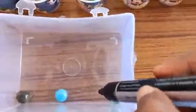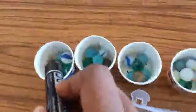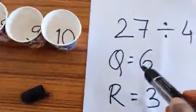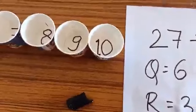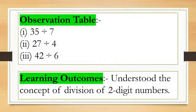How is the remainder 3? Because we have remaining 3 marbles. So the remainder is 3. And here in each cup we have 6 marbles, that's why our quotient is 6. This is our today's activity. Now, observation table. Observation table means you have to do the activity of 35 divided by 7, 27 divided by 4, and 42 divided by 6. These three you have to do through this activity.